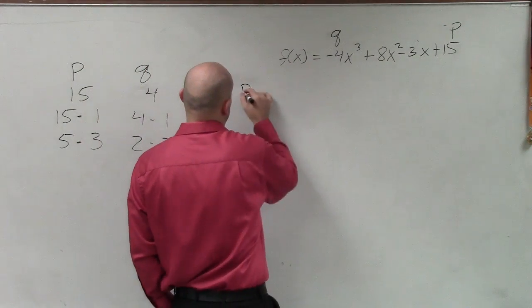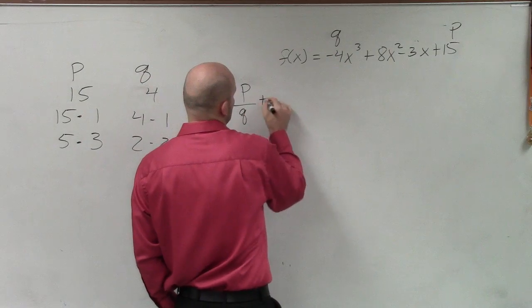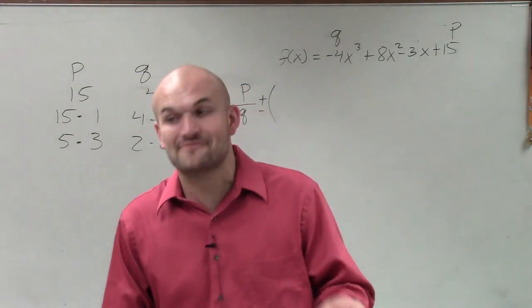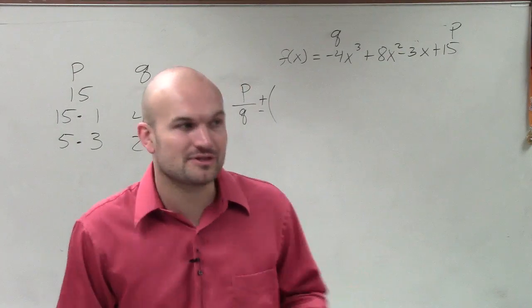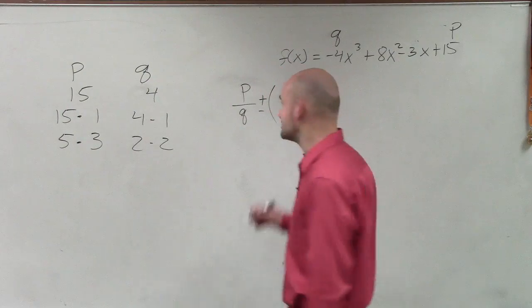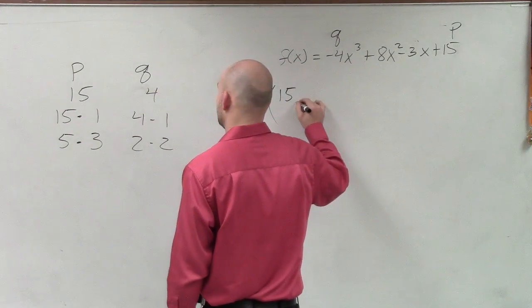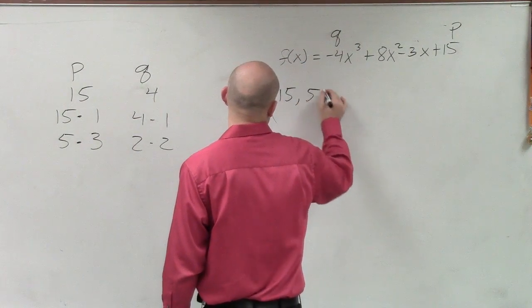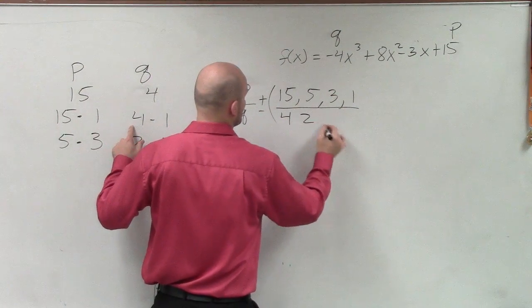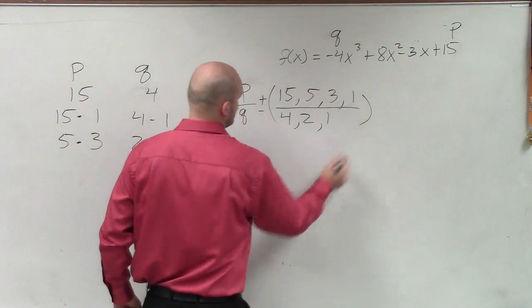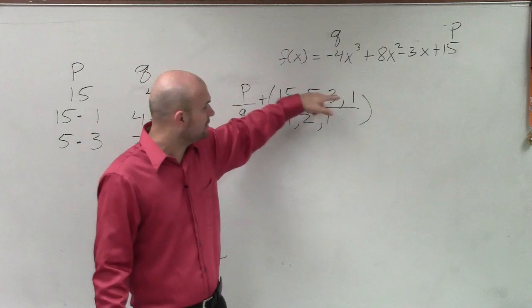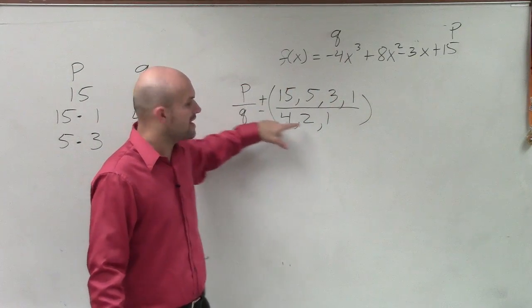So what I like to do a lot of times when I'm doing p over q, you can do the plus or minus outside parentheses. Rather than writing plus or minus for every single term, I prefer just to write plus or minus outside. And then I like to list them from greatest to least. So I have 15, 5, 3, and 1 all over 4, 2, and 1. So now I have to write every single numerator over every single denominator.